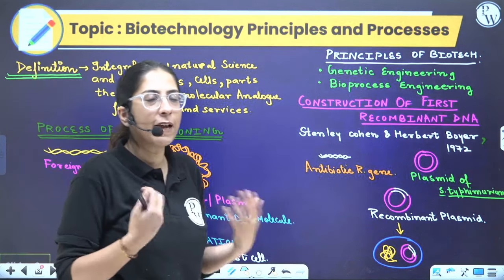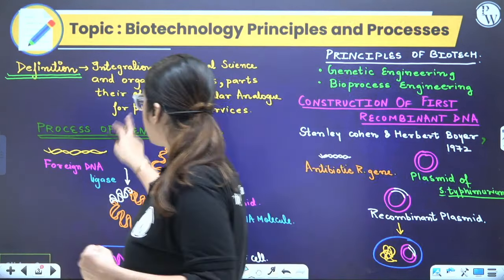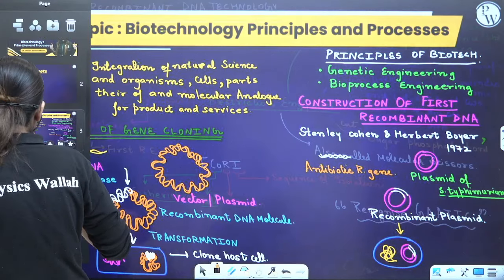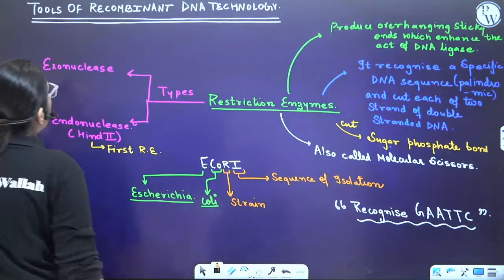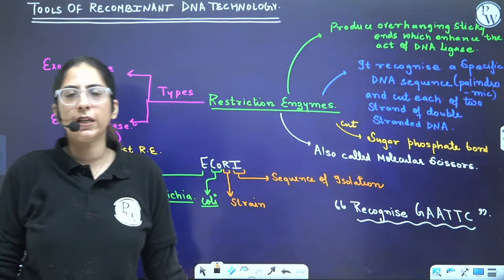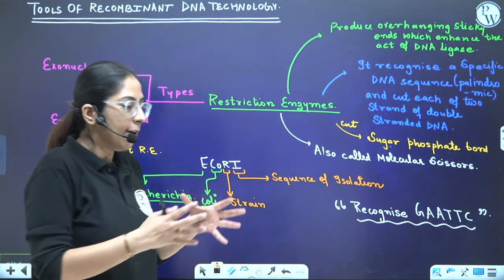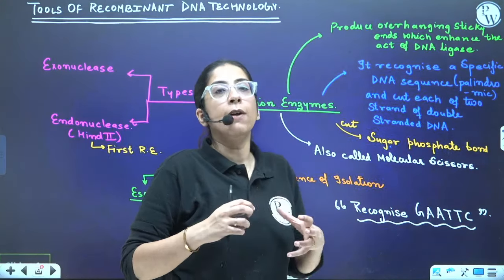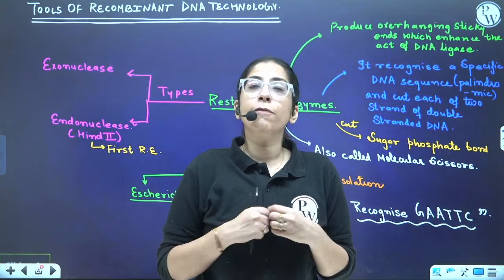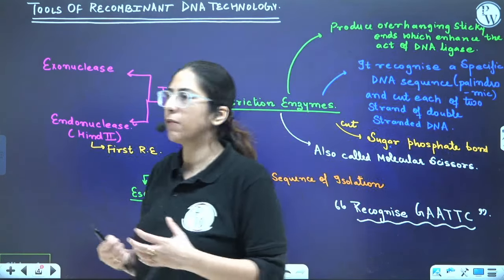After transformation, we culture these cells and get clones of the host cells — lots of host cells. This is the basic idea behind biotechnology, started by Stanley Cohen and Herbert Boyer in 1972. Now when we talk about the tools of recombinant DNA technology — tools needed for inserting and cutting DNA — let's talk about those tools one by one.